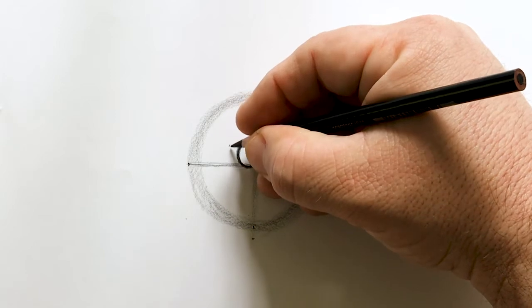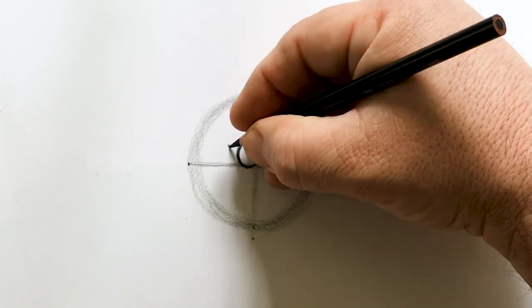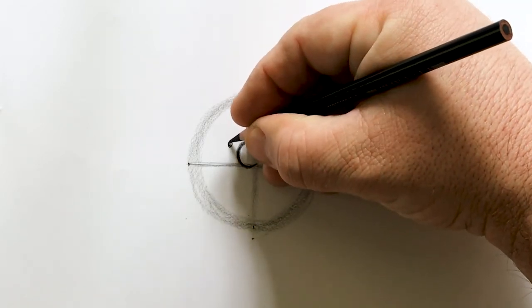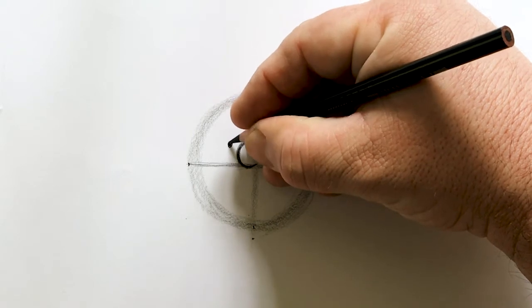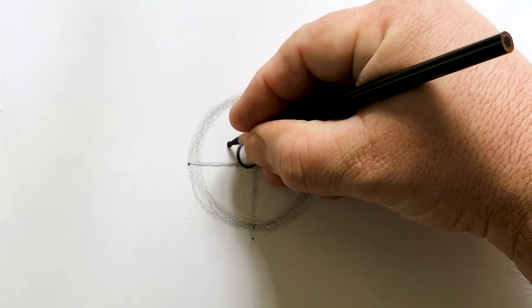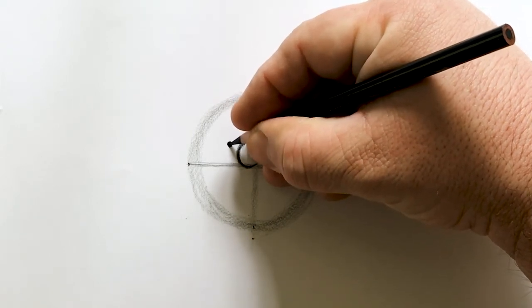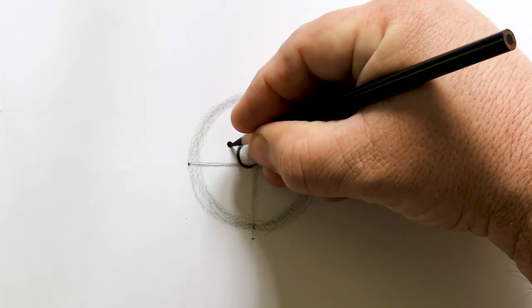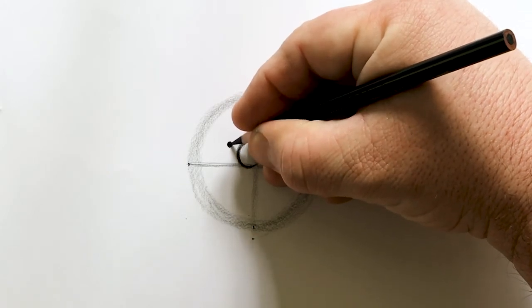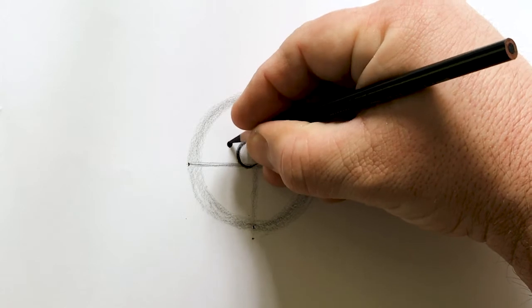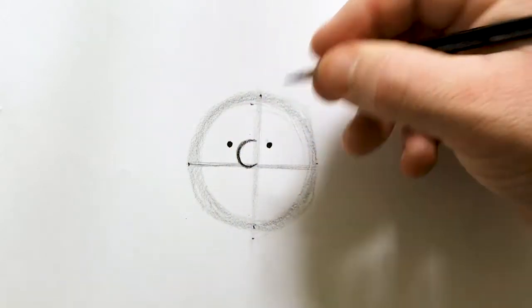Now once you got that circle the way you like it, I really want you to press down with the pencil and make this nice and dark. You can get the darkest tone out of a pencil by applying a bit more pressure to it. Remember how we were drawing lightly a moment ago? Well now we're adding detail work. That's a different technique. Pressing down a little harder. Lighter for sketching, darker for detail.